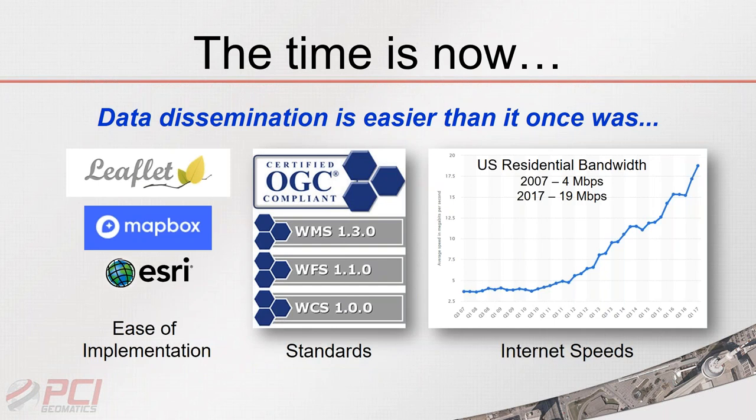Data dissemination is easier than it's ever been. The first factor is the ease of implementing a web map. Previously it was slow and complicated — you needed developers to write tools from scratch to translate geospatial data into formats a web browser could consume.